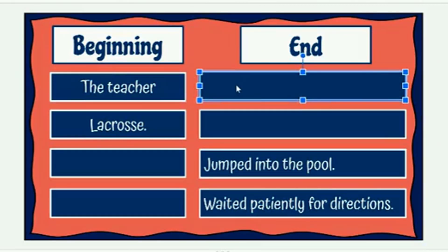You can go ahead and think of an ending for that sentence now. Remember that the end tells about what that person or thing did, does, or will do. I'll give you time to do that now. Now I'm looking at my sentence here — 'the teacher.' I'm going to make up my own ending and say 'says.'